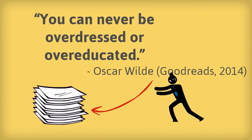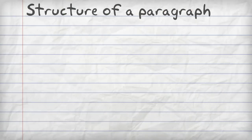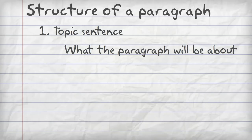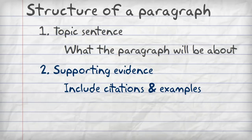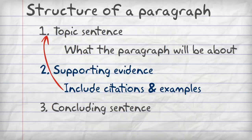First, let's review the structure of a paragraph. Usually, it starts with a topic sentence, which tells the reader what the paragraph will be about. Then you have your supporting evidence, which would include citations and examples to support the topic sentence. And the paragraph should end with a concluding sentence that links back to the topic sentence and the main idea of the essay.